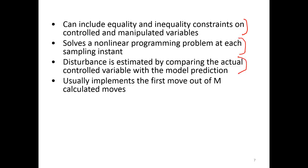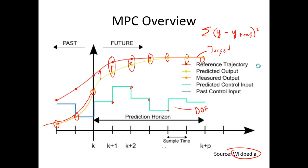The important thing with MPC is that we're just taking the first move out of the total calculated moves — that will actually be implemented in the process. At the next time step, everything shifts over by one and you recalculate your moves based on this new measurement that arrives at that time point. Then you implement this new move, everything else is thrown away, and it cycles again at the next sampling period.